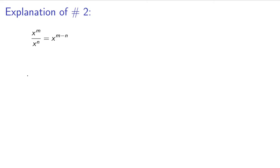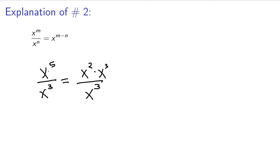x to the m over x to the n equals x to the m minus n. Let's do this one by example. x to the fifth over x cubed — by the basic exponential law, x to the fifth is the same thing as x squared times x cubed. The x cubed cancels and we have just x squared left. This 2 is five minus three. So what you're doing is you have m x's, you cancel n of them, and you end up with m minus n altogether. That's why you subtract whenever you divide.